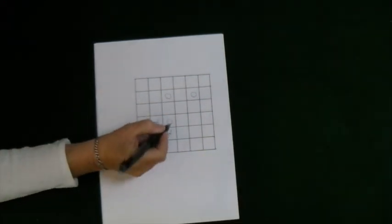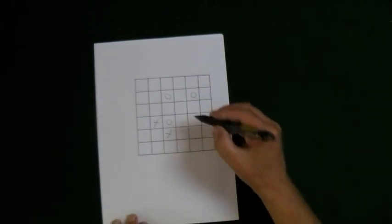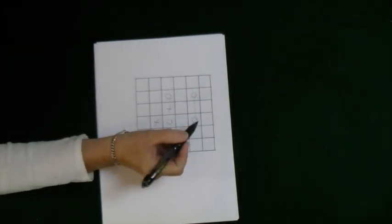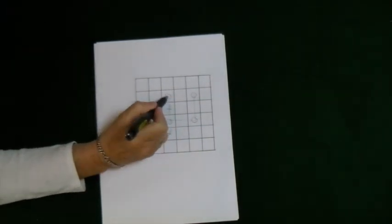My nought is going to go there. And I'm going to put my cross there. And my nought is going to go there and then I have made a square. You have.